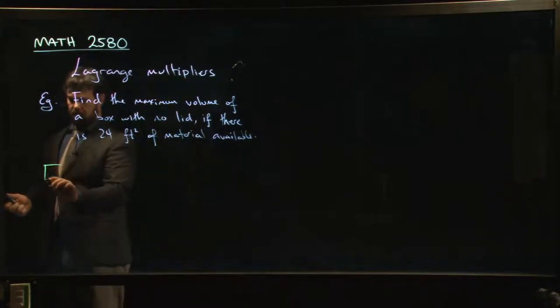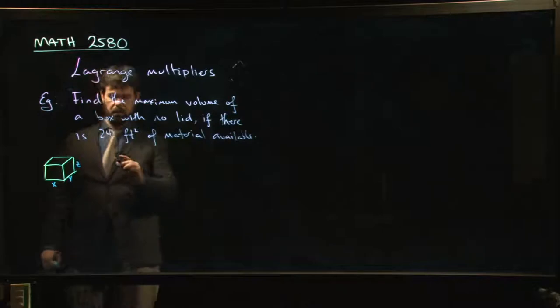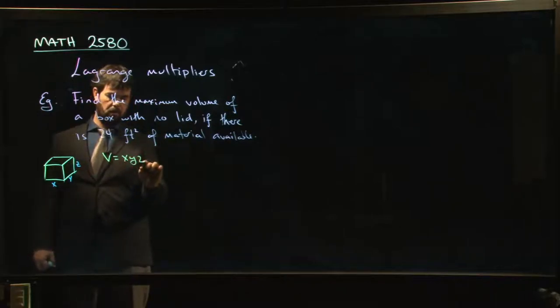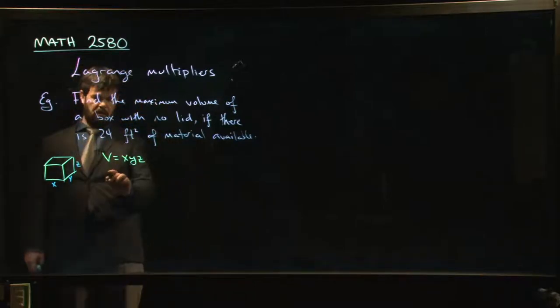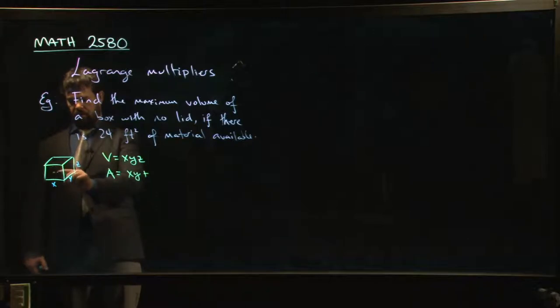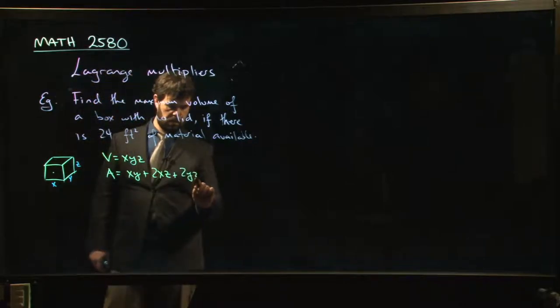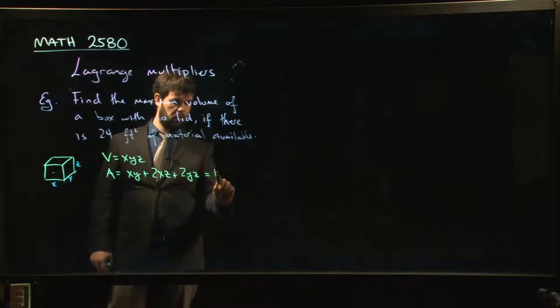Well, probably start by drawing a box, right? Here's our lovely box. Our box has three dimensions, length, width, and height. We know that the volume of our box is x, y, z. We have a total area available to us of, well, there's the base, xy. There are two sides, the front and the back, that have area x times z, 2xz. Two sides with area yz, 2yz. And we want that to equal 24. All right, so there's your setup.